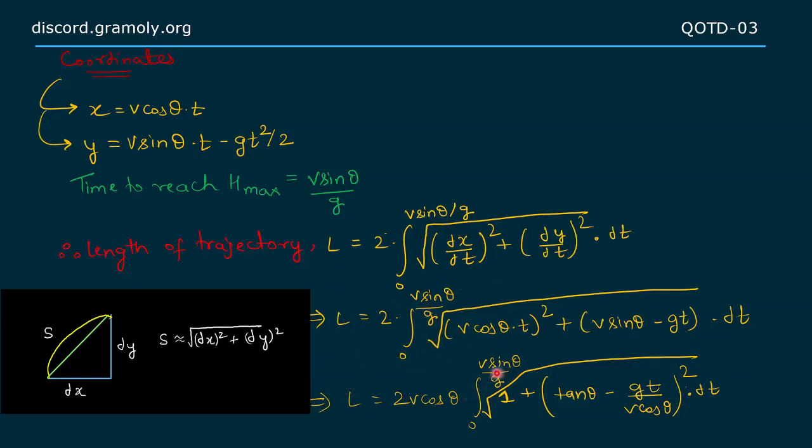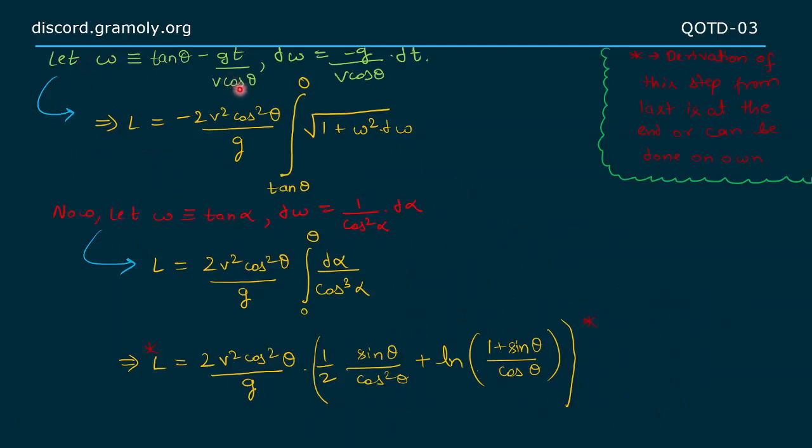Solving further, we get length of trajectory as equal to 2v cos θ times root under 1 plus (tan θ minus gt upon v cos θ)² times dt from 0 to v sin θ by g.